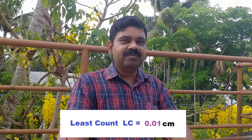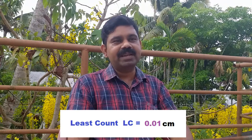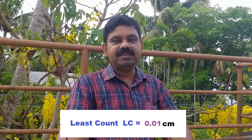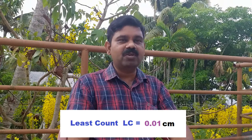Vernier calipers is a measuring instrument used to measure length with a precision of 0.01 cm. That means Vernier calipers can have a least count of 0.01 cm.